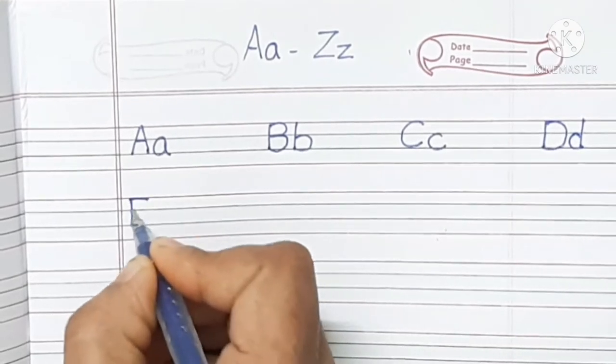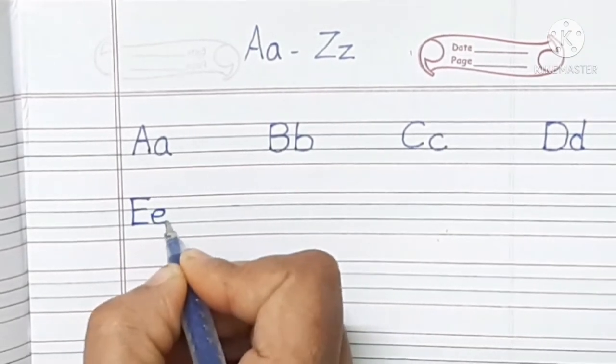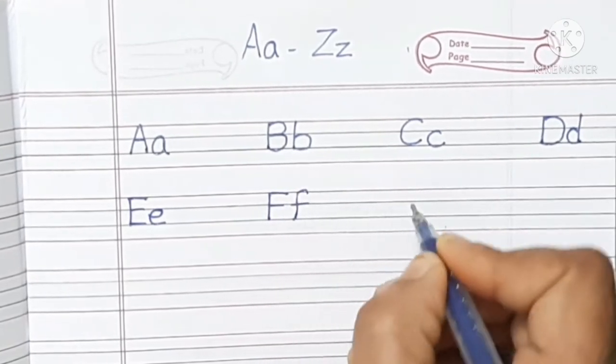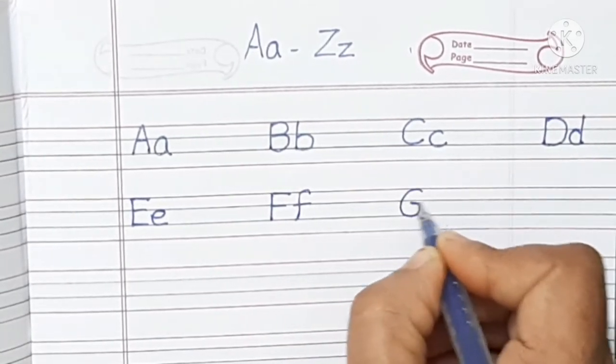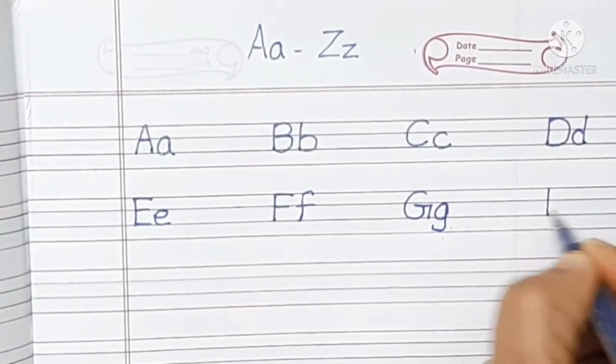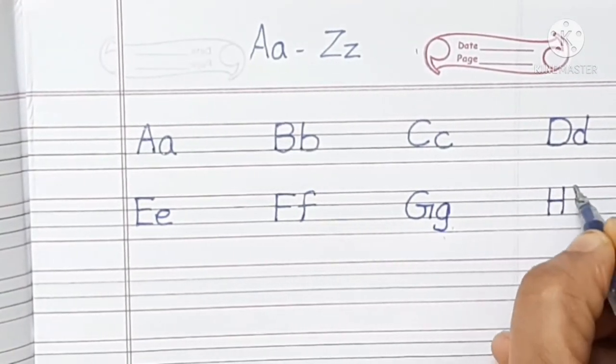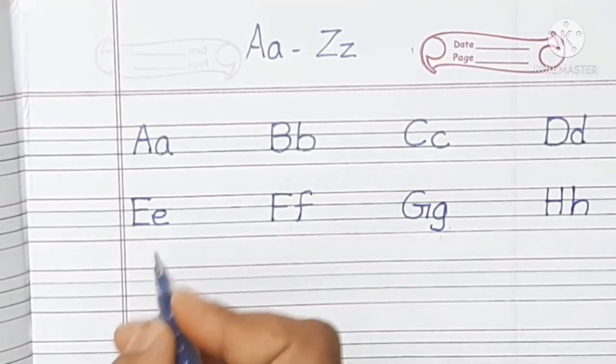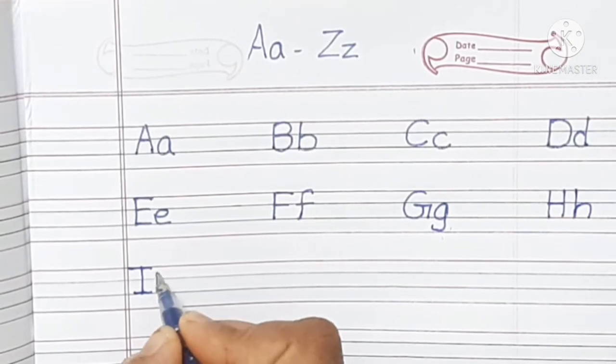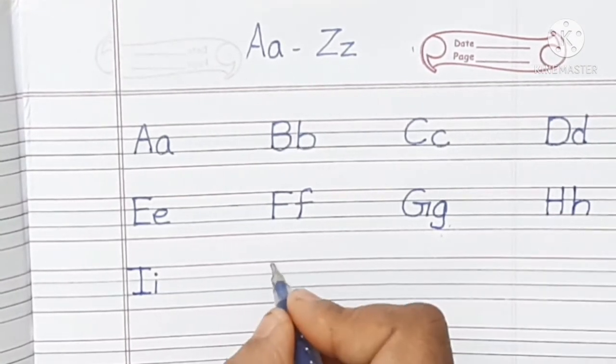Capital F small f, capital G small g, capital H small h, capital I small i, capital J small j.